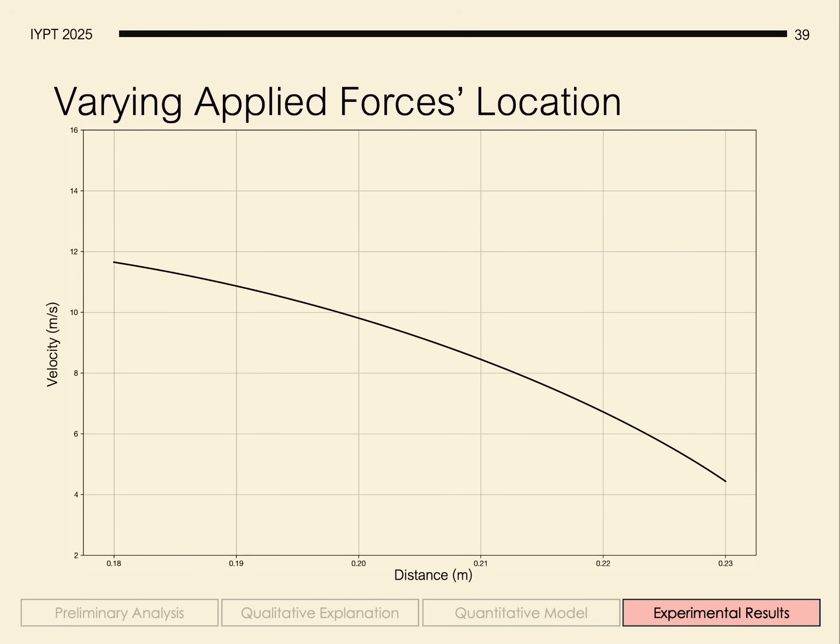As we vary the location of the force closer to the ball, we notice that as we increase the distance closer to the ball, the velocity actually decreased.